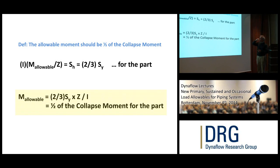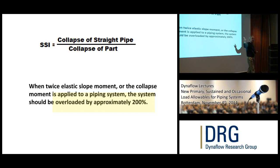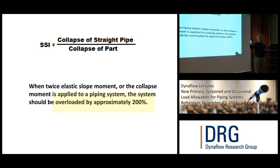To summarize: the allowable moment is half the collapse moment. The SSI or sustained stress index is the collapse of straight pipe over the collapse of the part. When the twice elastic slope moment is applied to a piping system, the system should be overloaded by 200%. If you've got a test that gave you the twice elastic slope value, you should be able to put that into Caesar and see double the allowable — 200% of the allowable — as an indication that the software is doing what you expect.